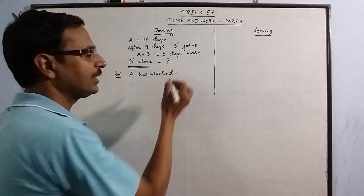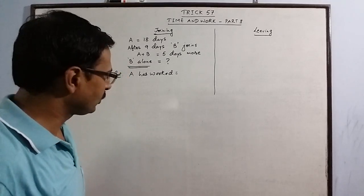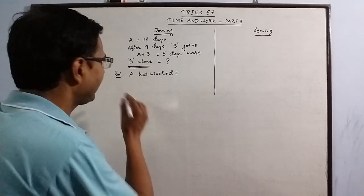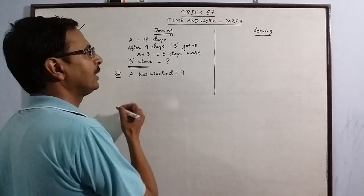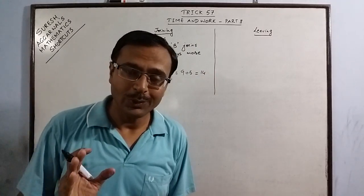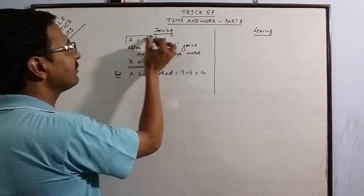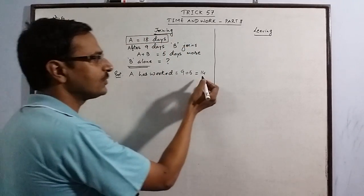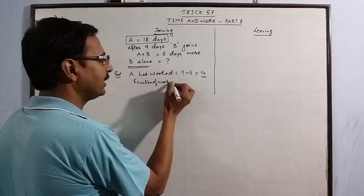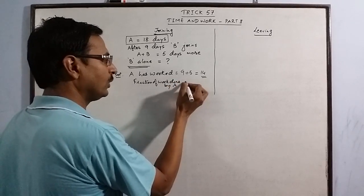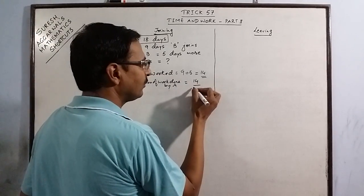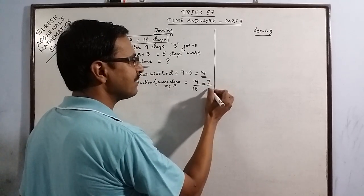I am writing all the steps here, but in competitive exams you don't need to write all the steps — you can jot them down in rough work or do them verbally. A worked nine days alone and five days together with B, so he has worked for 14 days total. If A alone does the work in 18 days but worked 14 days, the fraction of work done by A is 14/18, which equals 7/9.